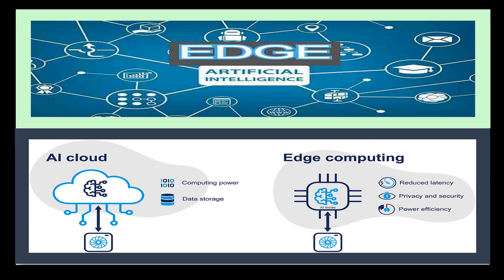Then comes Edge AI. Edge AI refers to the computing paradigm that moves certain elements of AI processing away from central servers or cloud infrastructure and distributes them closer to the sources of raw data generation — typically smart devices, sensors, or Internet of Things nodes — in order to reduce latency, conserve bandwidth, preserve privacy, and improve overall efficiency and autonomy. This approach is called 'Edge' because it involves performing computational tasks near the physical edge of the network instead of sending all data back through the internet or cellular towers for analysis.